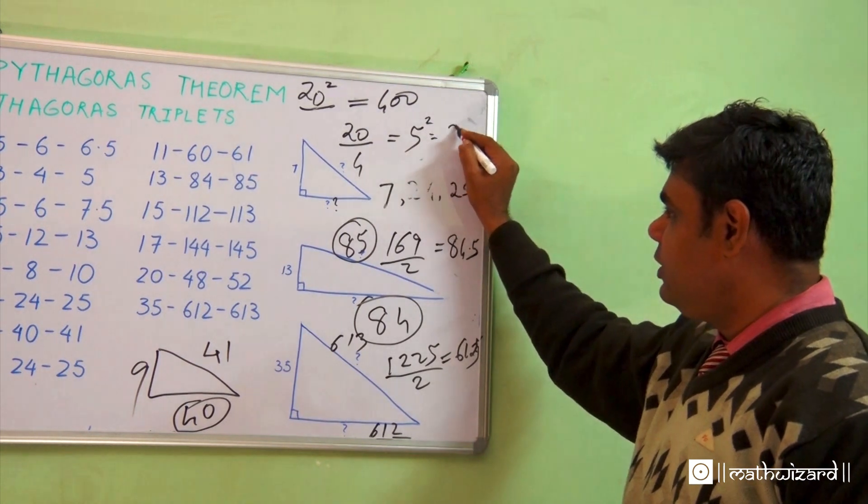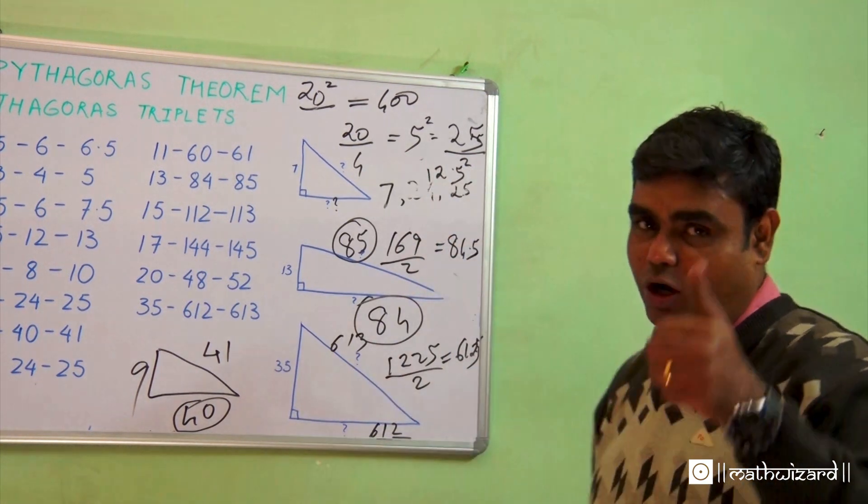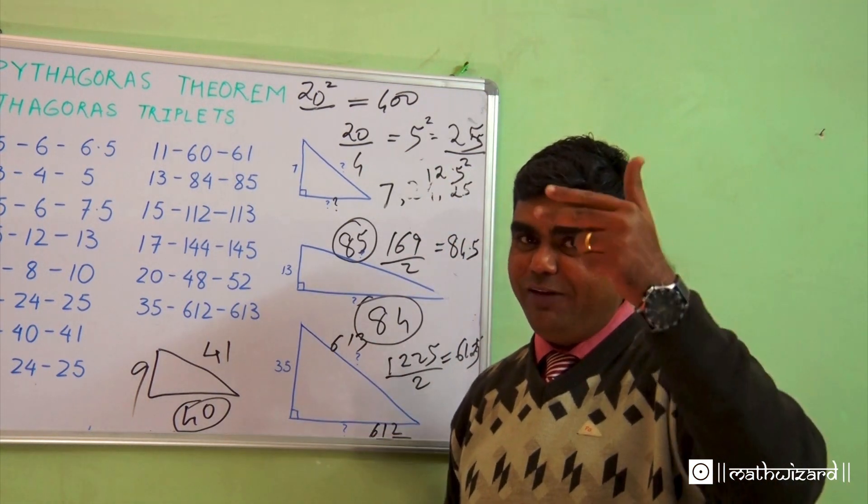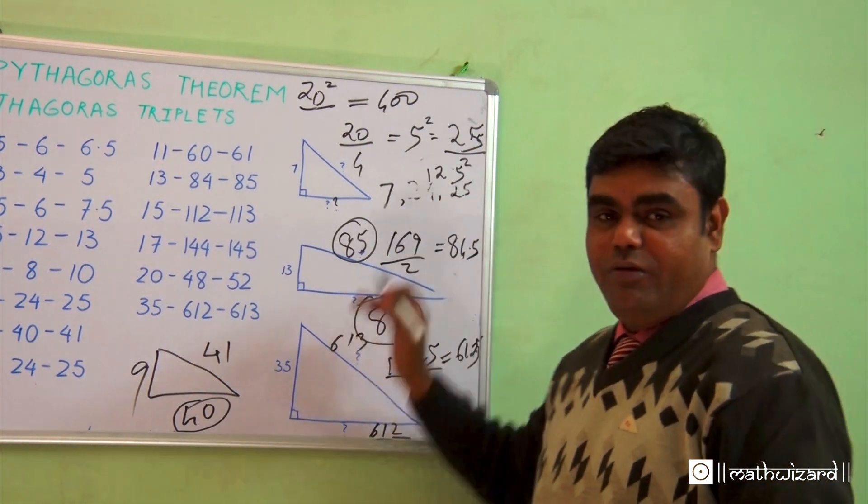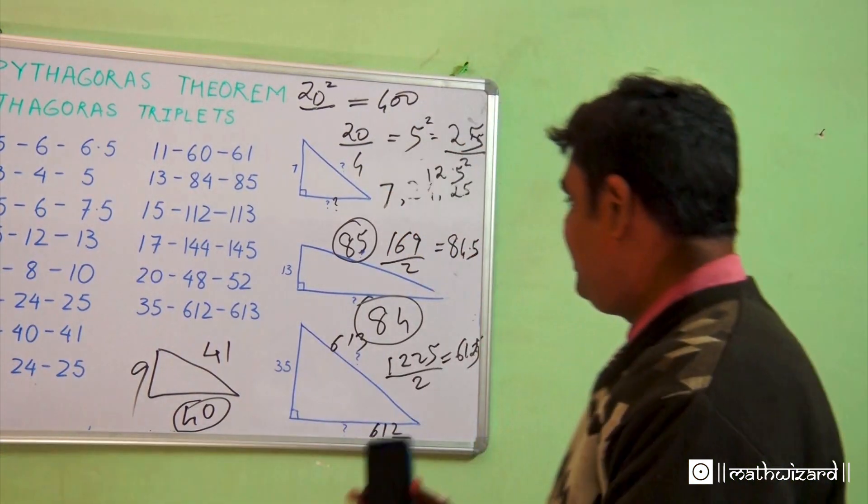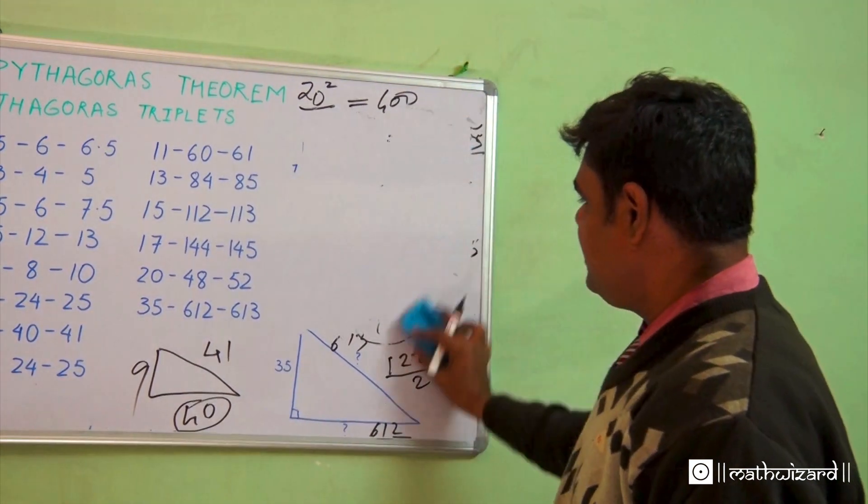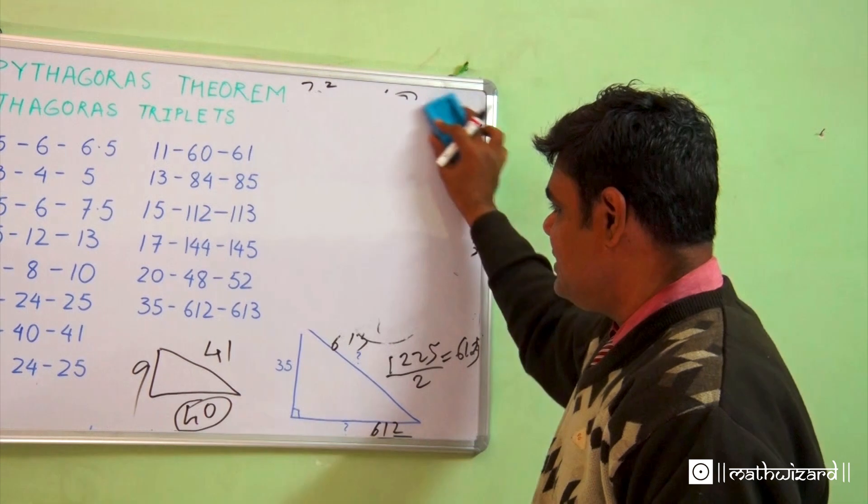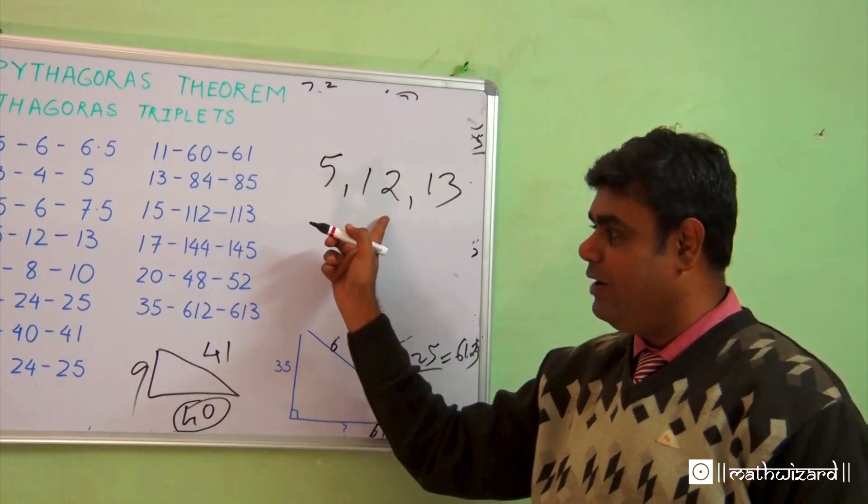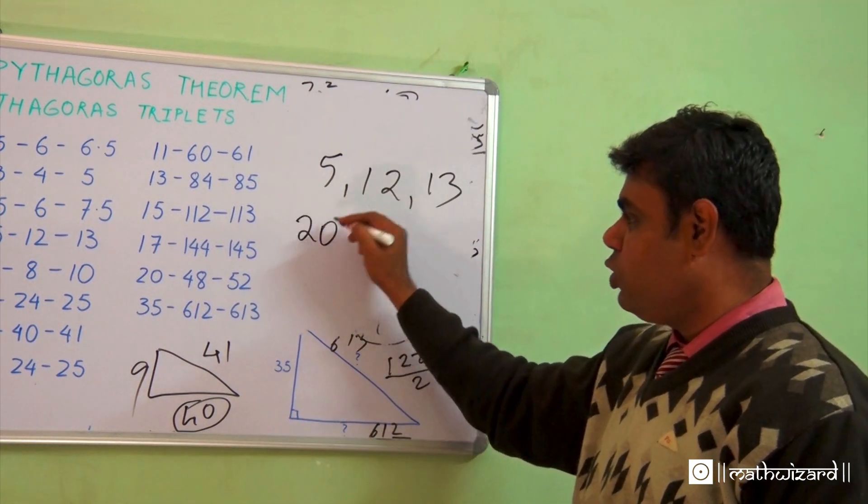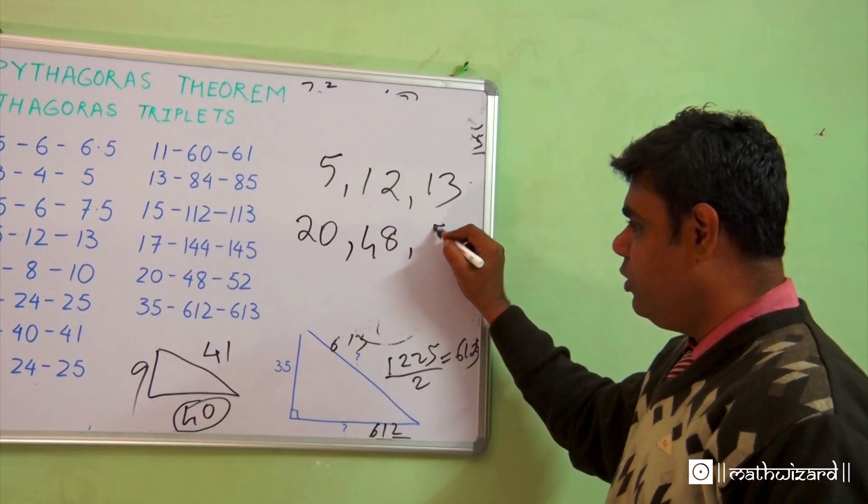5 square is 25, the half of which is 12.5. So I've got my triplets 5, 12, 13. I divided it by 4, so now I'll multiply by 4. I will get my final triplets. In the first case, I got the answers as 5, 12, 13, but this is not my triplet. My actual number was 20, so I divided it by 4. I'll multiply it by 4, I'll get 48 and 52.